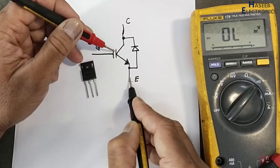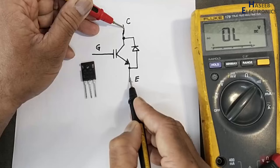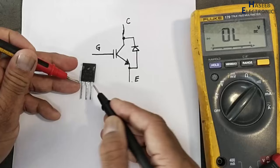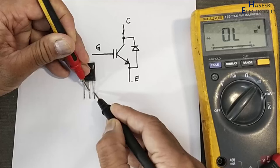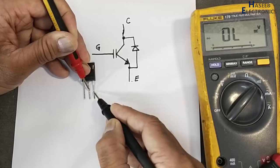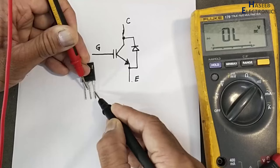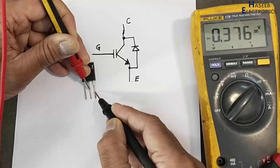At that time, emitter to collector channel will turn on, so we will receive this path. Open circuit, emitter to collector, open circuit. Now I will touch red lead to gate, return back to collector. Now we can see it is showing 0.377. Before this it was open circuit. Just after touching red lead to the gate, the channel is turned on.